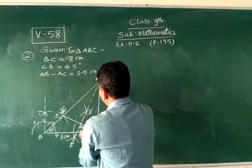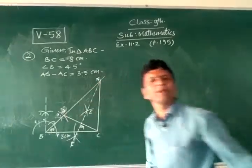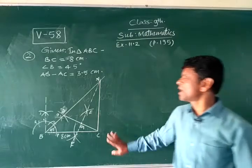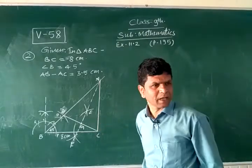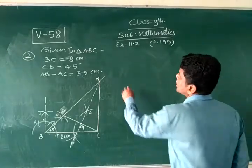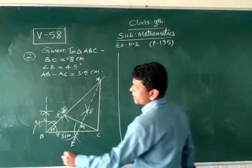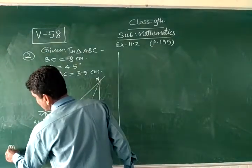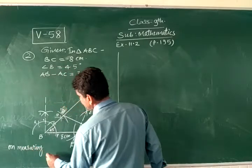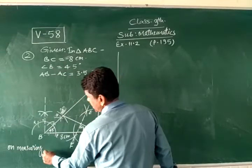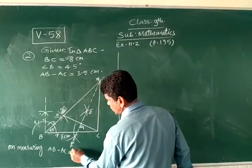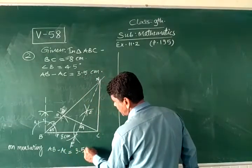AB minus AC is 3.5 because these two sides are equal. Then AB minus AC is 3.5, clear? By measuring you can get it. So now draw this complete diagram, clear? And now question number 3. On measuring you can write here, on measuring AB minus AC is equal to 3.5 cm.